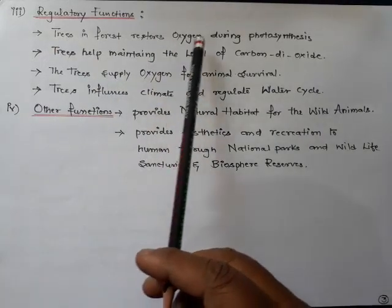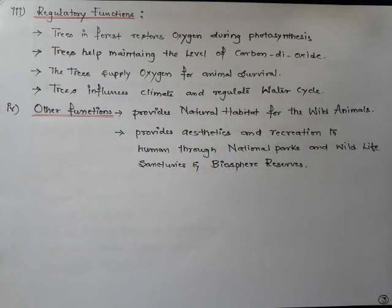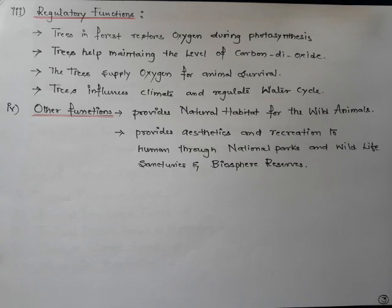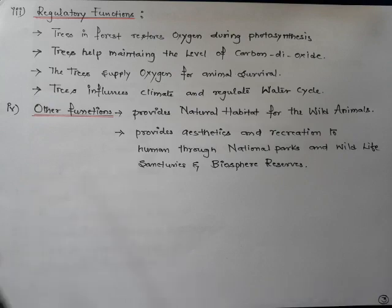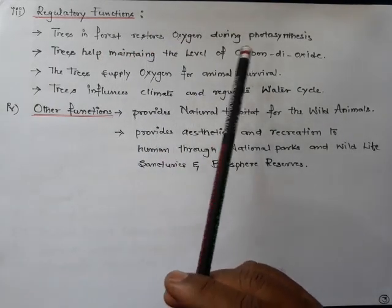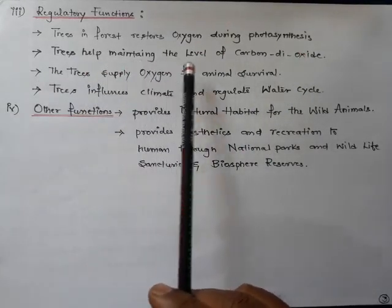Trees in the forest restore oxygen during photosynthesis. Plants use the green pigment chlorophyll along with carbon dioxide from the atmosphere to prepare their own food, and they liberate oxygen into the atmosphere. Oxygen given out by plants is essential for the survival of animals and human beings. So trees and plants play a very important role in restoring oxygen in the atmosphere.